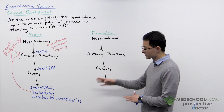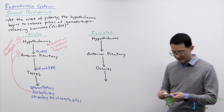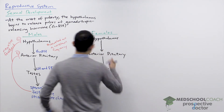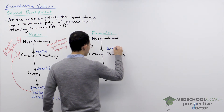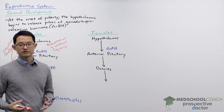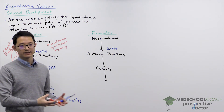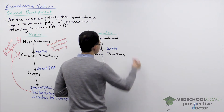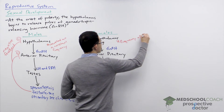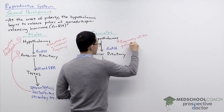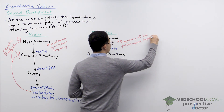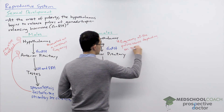Now let's take a look at females. In females, at the onset of puberty the hypothalamus also starts releasing pulses of GnRH. The key difference between males and females is that in males the GnRH pulses are at a constant frequency, whereas in females the frequency of the pulses varies depending on the menstrual cycle.